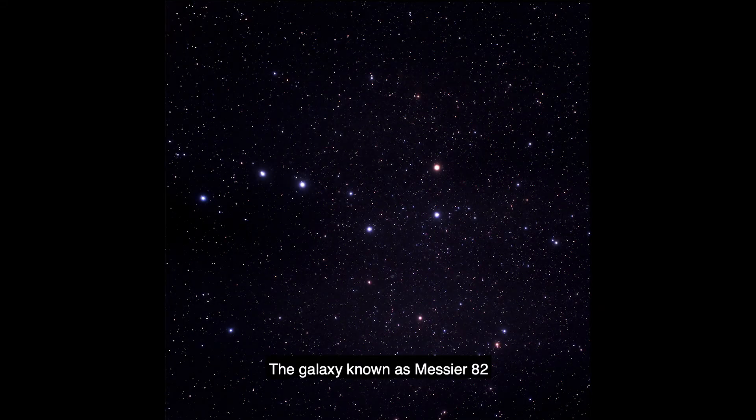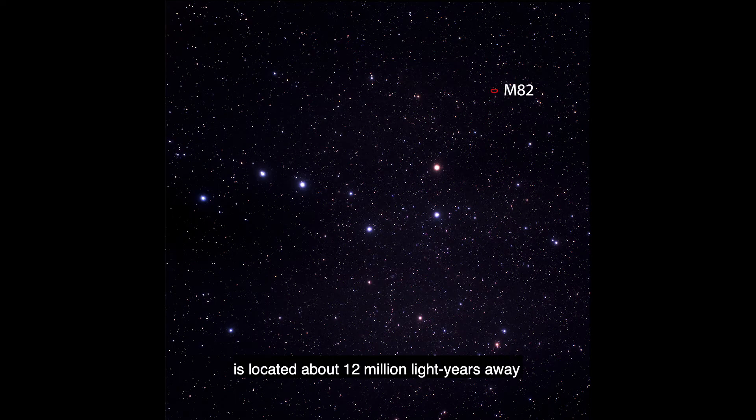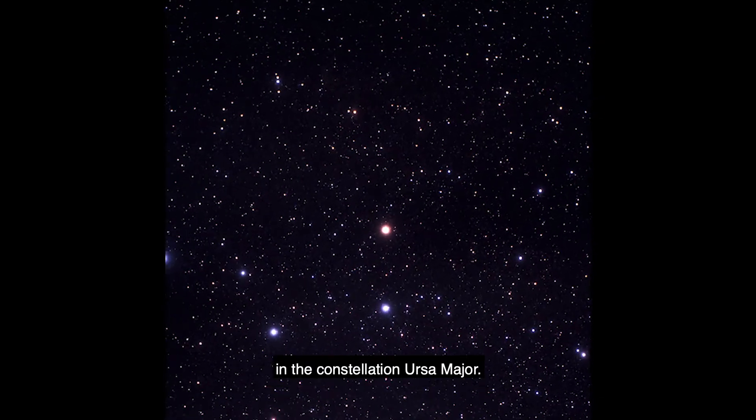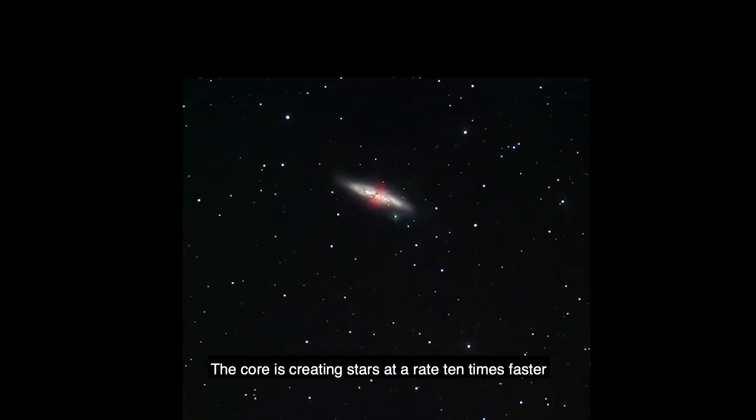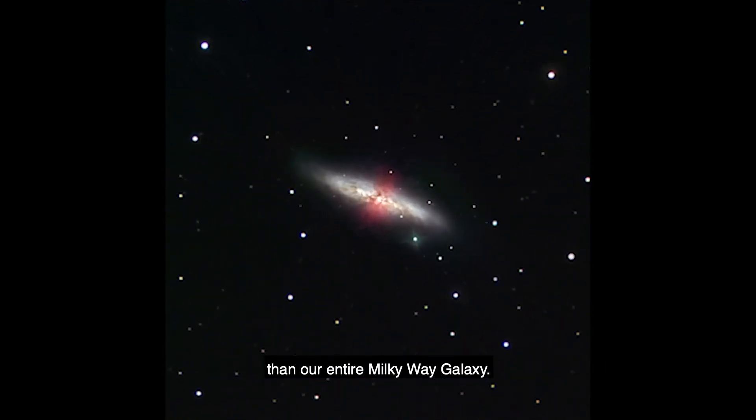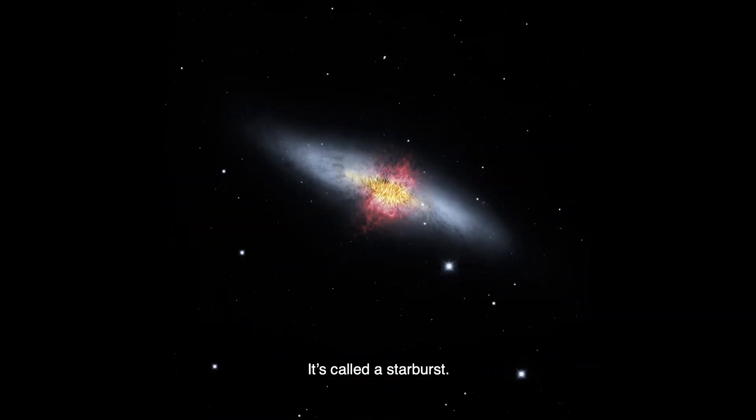The galaxy known as Messier 82 is located about 12 million light-years away in the constellation Ursa Major. The core is creating stars at a rate 10 times faster than our entire Milky Way galaxy. It's called a starburst.